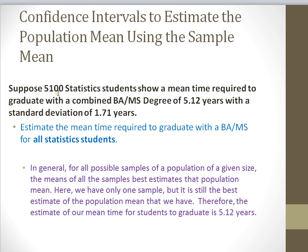Suppose we have 5,100 statistics students and these students show a mean time required to graduate with a combined bachelor's and master's degree of 5.12 years, with a standard deviation of 1.71 years. So we have a very large sample of 5,100 students. We know the time it takes them to get a combined BAMS degree is about 5.12 years, and the standard deviation is 1.71 years.